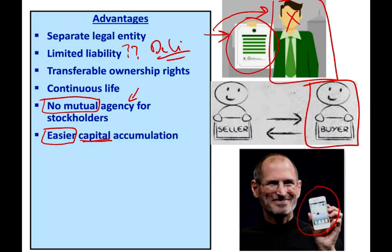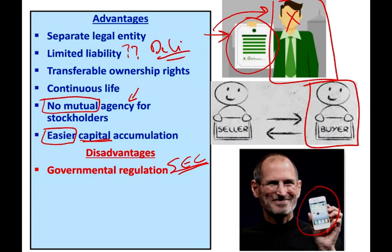Some disadvantages include governmental regulation, especially the SEC — the Securities and Exchange Commission. Once you are a publicly traded corporation, the government is breathing down your neck, asking you for different reports and different compliance requirements. You have extra costs, especially when the internal controls rule came out — SOX 404. Those are additional burdens for the company because they are public corporations, and once you are public, the government regulates you.